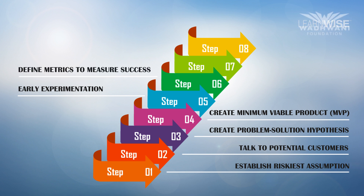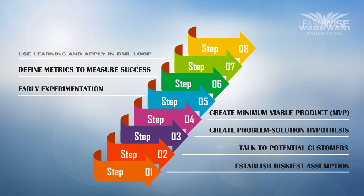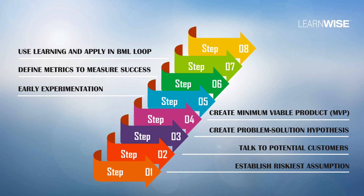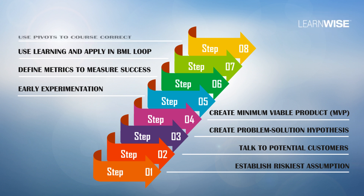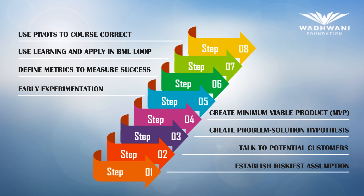Step 5 is to use early experimentation to validate your assumptions. Step 6 is to define metrics that will help you measure your success parameters. Step 7 is to use your learning from the results and apply it in the build-measure-learn loop to speed up your product development. Step 8 is when entrepreneurs use pivots to course correct themselves.